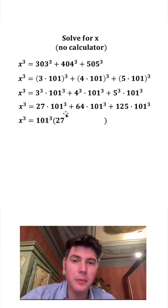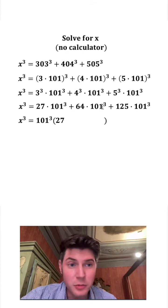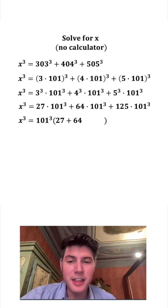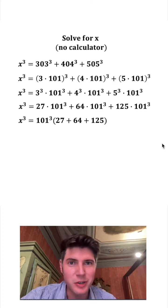And then 101 cubed times what gives me 64 101 cubes? Well, that's going to be plus 64. And then 101 cubed times what gives me 125 101 cubes? That's going to be 125. So if I distributed this, it would bring me to the step before.